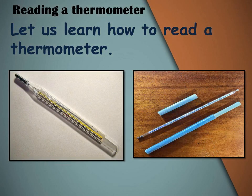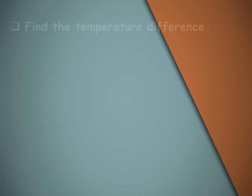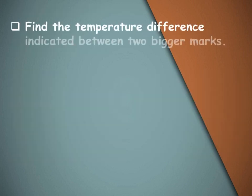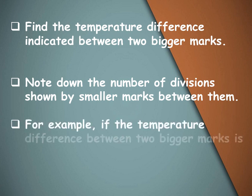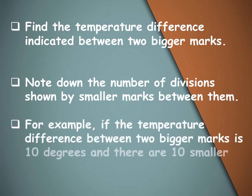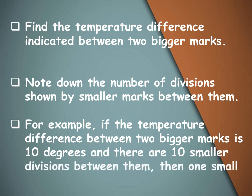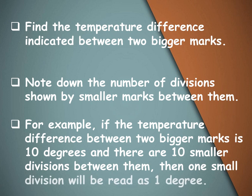Let's learn how to read a thermometer. In order to read a thermometer, first of all, find the temperature difference indicated between two bigger marks on the thermometer. Note down the number of divisions shown by smaller marks between them. For example, if the temperature difference between two bigger marks is 10 degrees and there are 10 smaller divisions between them, then one small division will be read as 1 degree.